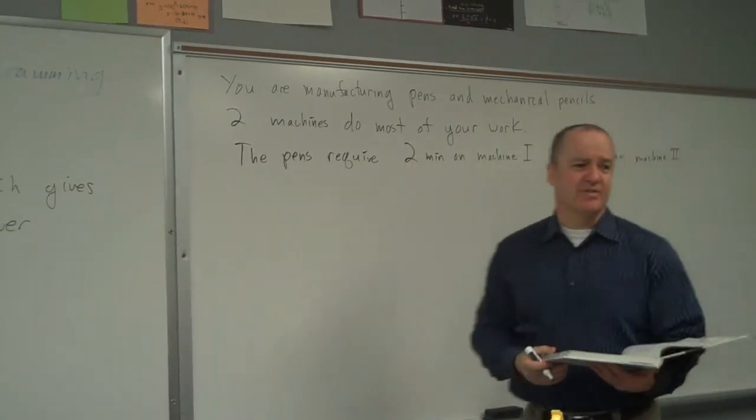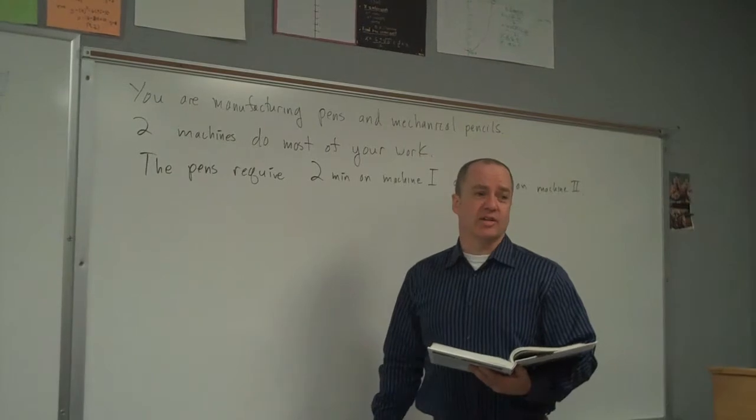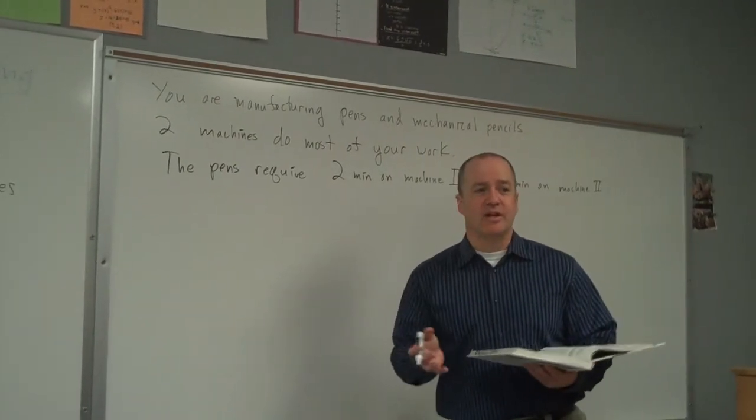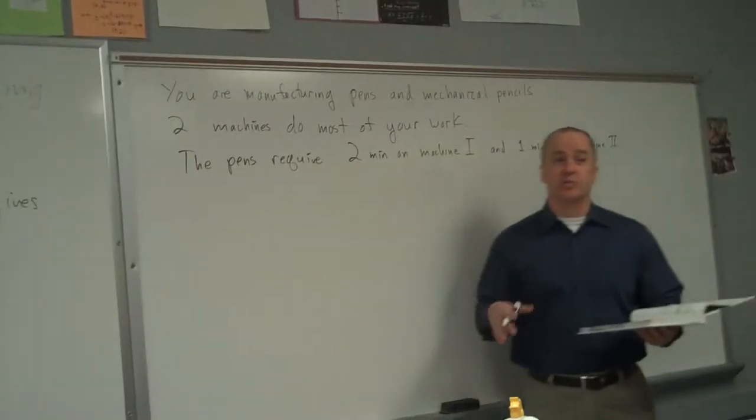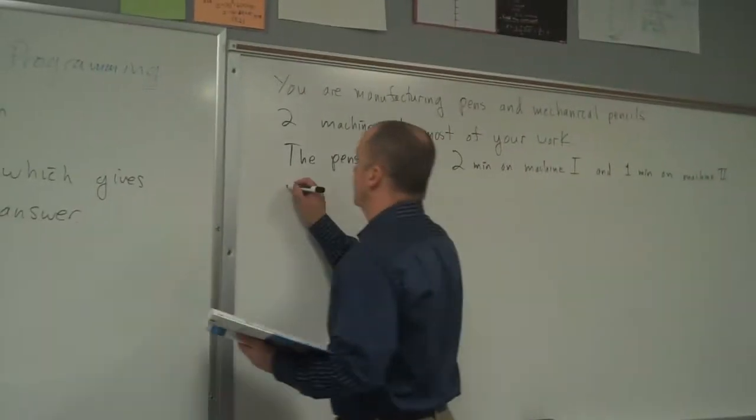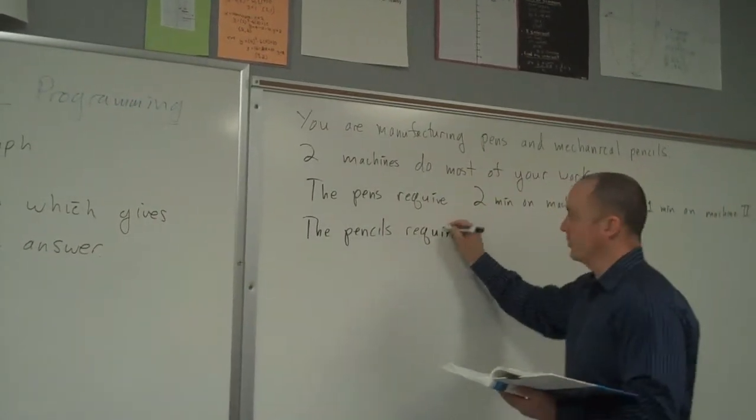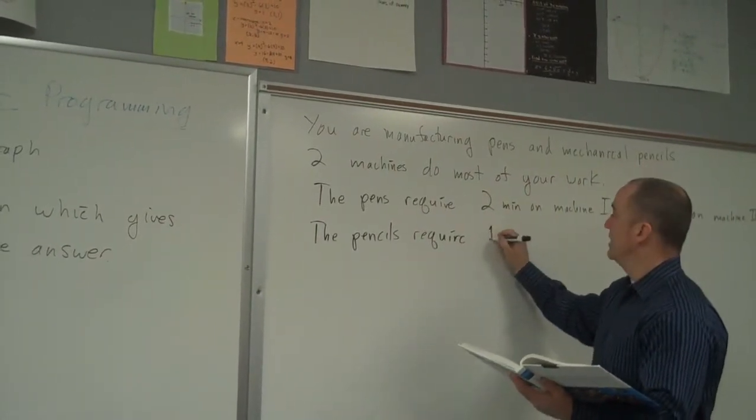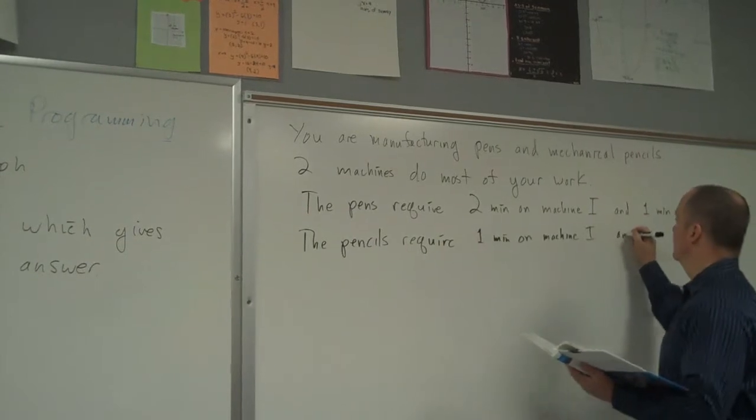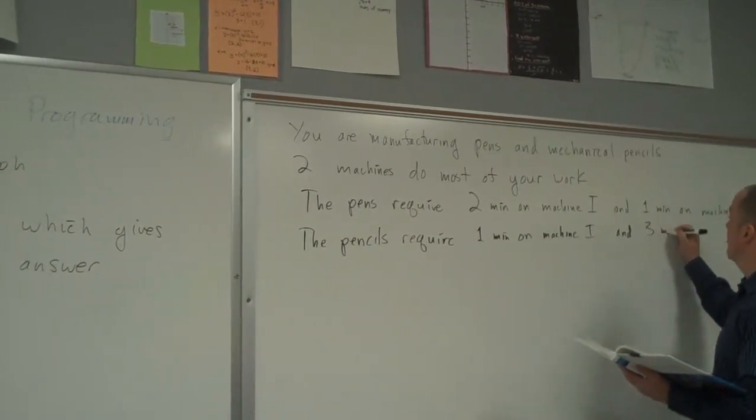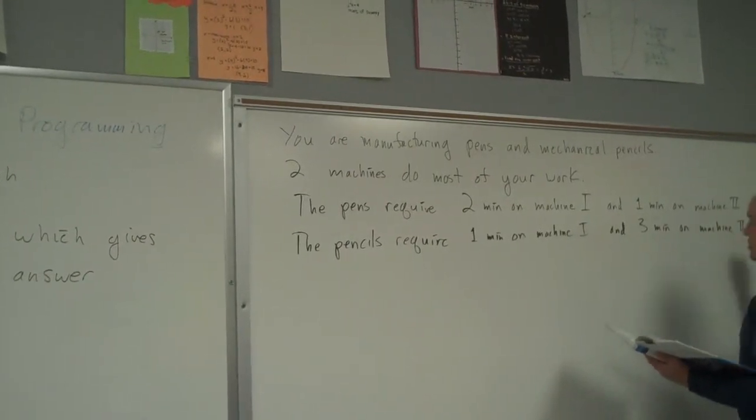Can you picture this? It's like a giant conveyor belt. Pens and mechanical pencils might be similar enough. And in real life, if you're really doing this for a factory, you're going to have like nine machines and eleven equations. So we're doing a really super simple version of it. The pencils require one minute on machine one and three minutes on machine two.